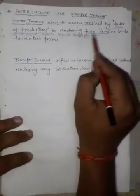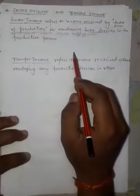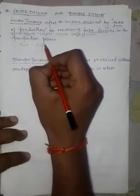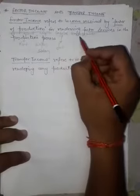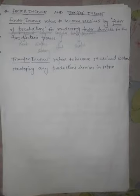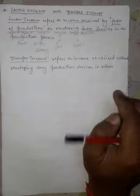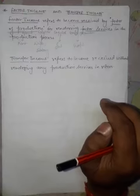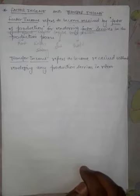In the production process, factor services are given with the help of factor of production, and from those factors we generate income. As I told you: from land we get rent, from labor we get wages, if employed then salary, from capital we get interest, and from entrepreneur we get profit. This income generated is known as factor income.